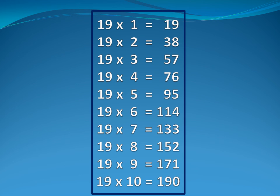Nineteen six is one hundred and fourteen. Nineteen seven is one hundred and thirty-three. Nineteen eight is one hundred and fifty-two. Nineteen nine is one hundred and seventy-one. Nineteen ten is one hundred and ninety.